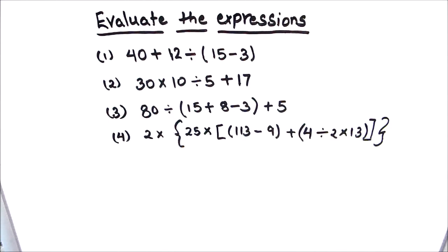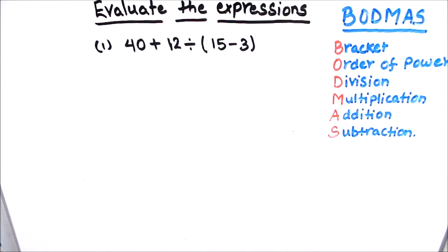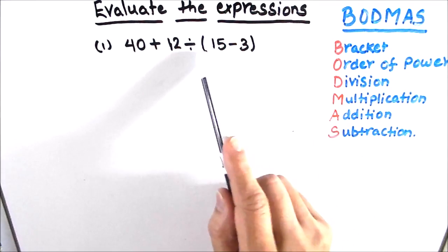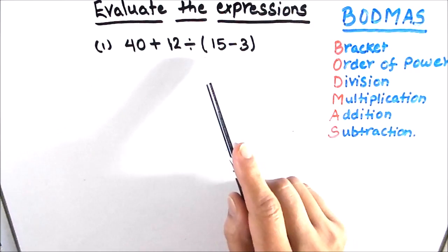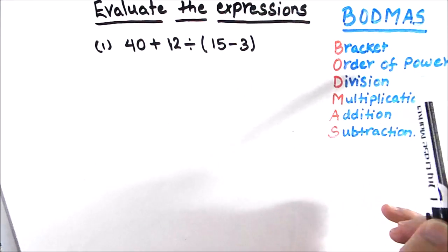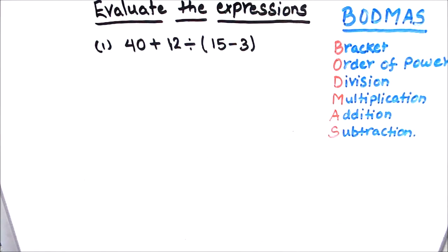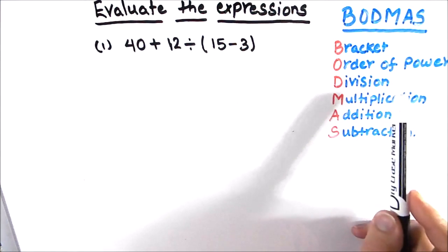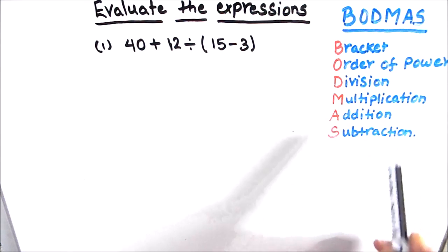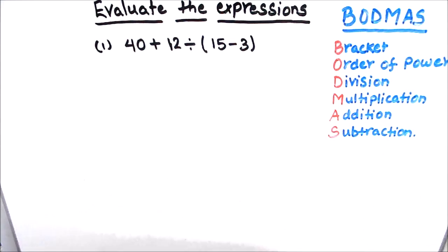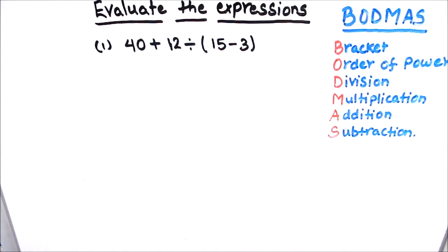Hello everyone. In this video we are going to learn how to evaluate these types of expressions. For solving these expressions we are going to be using the BODMAS rule. BODMAS rule tells us the order in which different operations in an expression need to be solved. First, if there is any bracket we solve that. Second is the order of power or root. Third is division, fourth is multiplication, fifth is addition, and sixth is subtraction. If we solve the expression in this order then we are following the BODMAS rule and our answer will be correct.